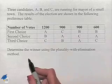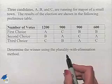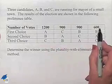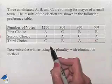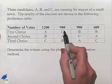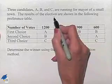This time we want to determine the winner using the plurality with elimination method. Now this requires us to know what a majority would be, so we're going to begin by adding up the total number of votes. That's going to give us 1,200 plus 1,800, which would be 3,000, plus 600, to give us a total number of votes of 3,600.